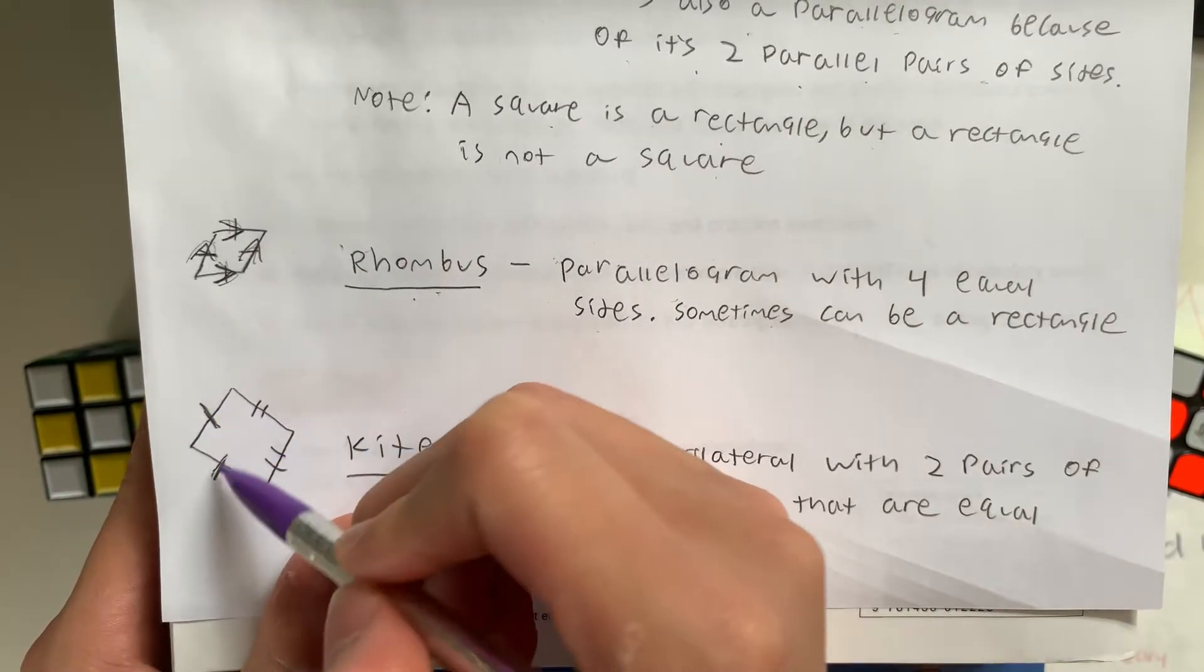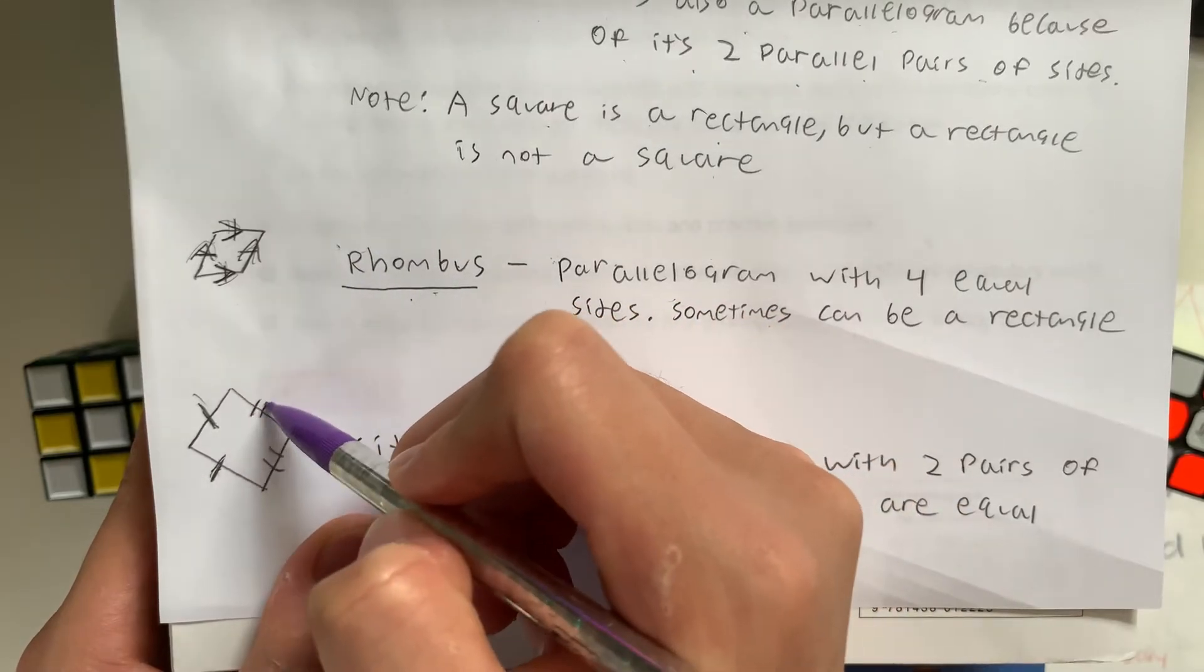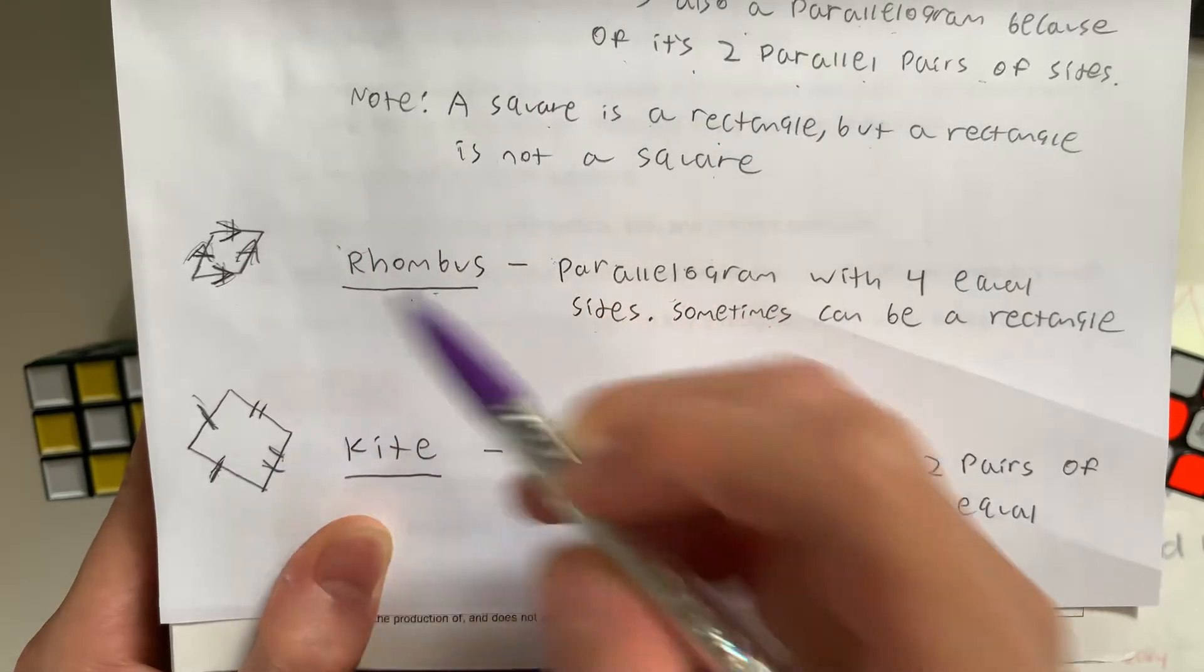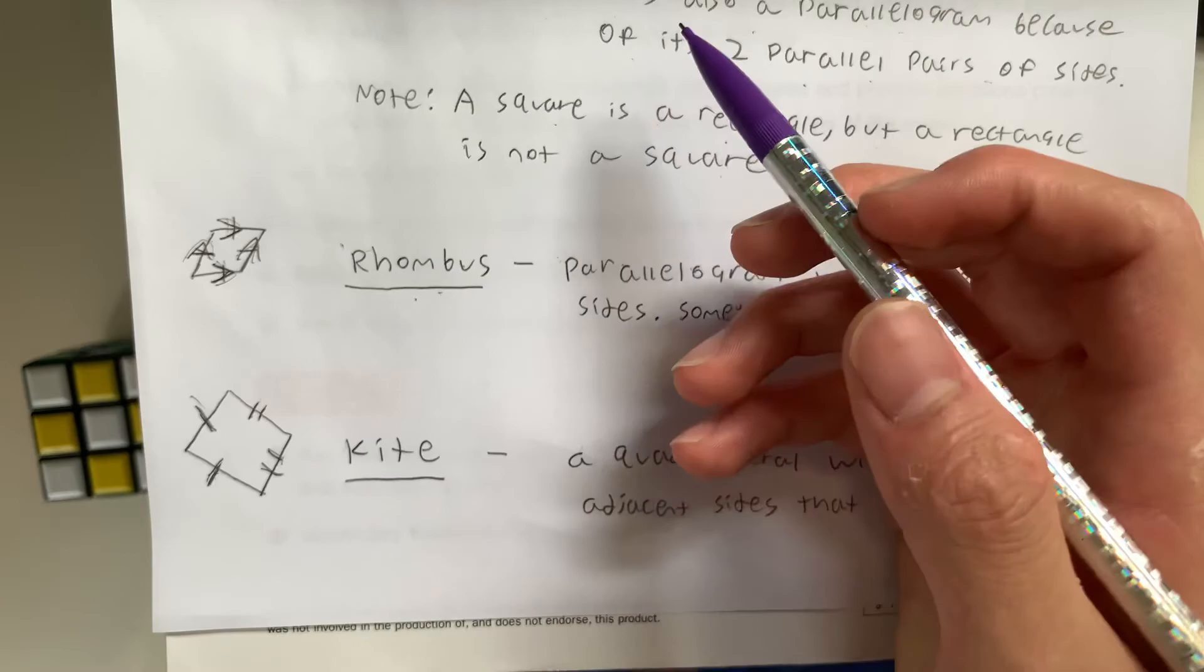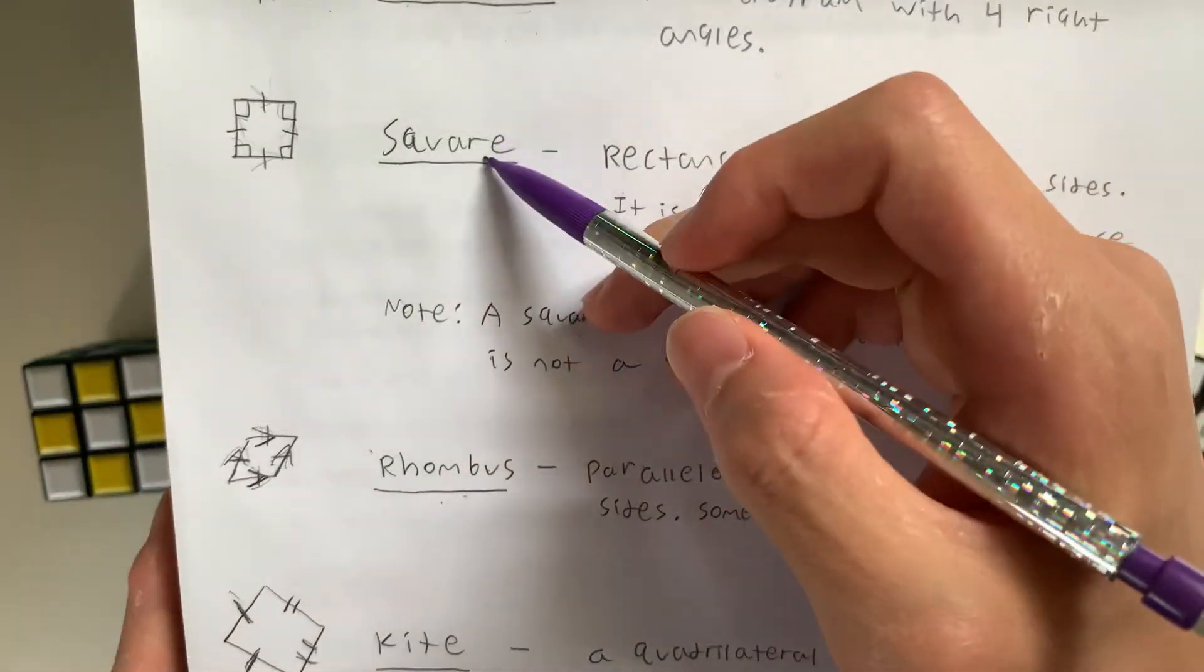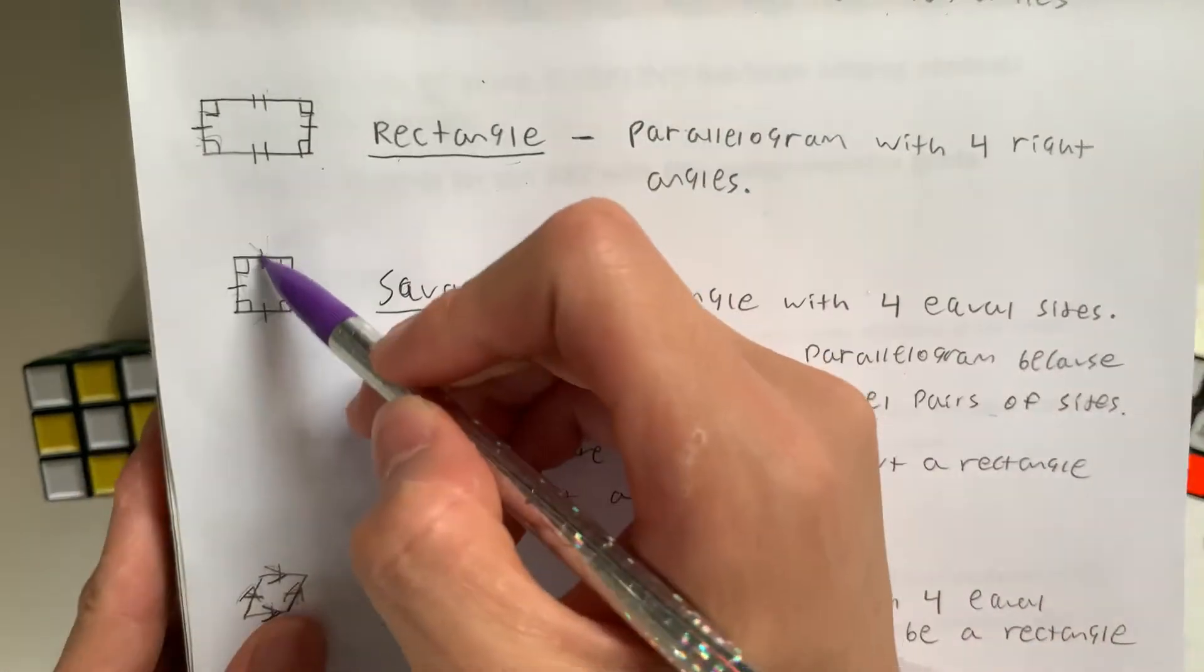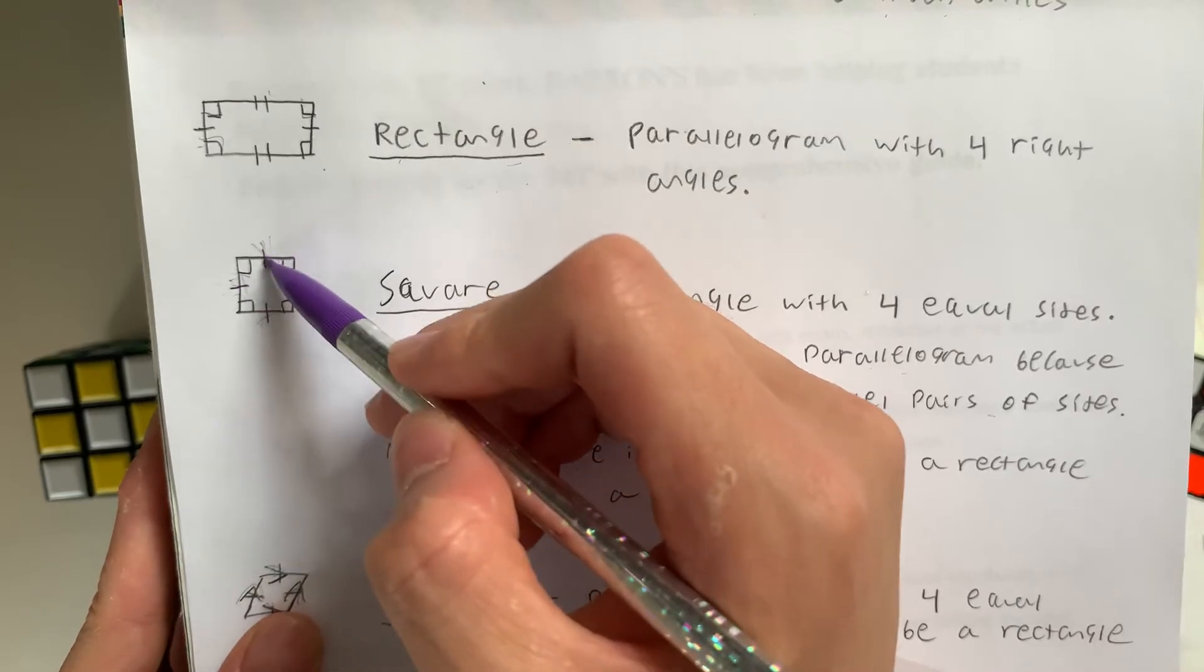For example, these two are adjacent because they're right next to each other and they're the same. And these two are right next to each other and they're the same. But sometimes a kite can be a square because sometimes all sides are equal, which means adjacent sides are equal.